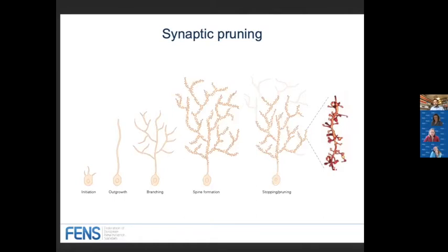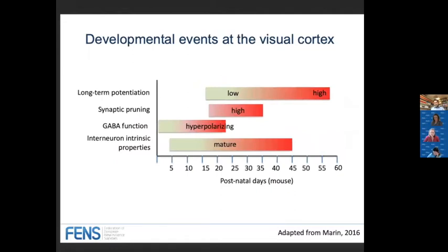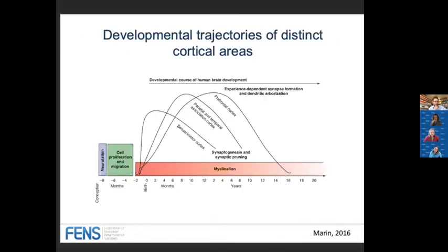During synaptic pruning, synapses are eliminated and adjusted to environmental stimulation. There are also other developmental events such as long-term potentiation, the switch of GABAergic function from depolarizing to hyperpolarizing, and the maturation of interneuron intrinsic properties in the visual cortex. As Simon touched upon, not all cortical areas mature the same way. Synaptic pruning happens earliest in the sensorimotor cortex and at a later time point in the parietal and prefrontal cortex.